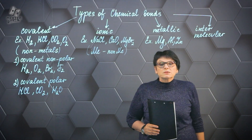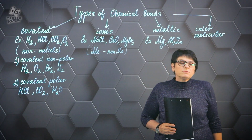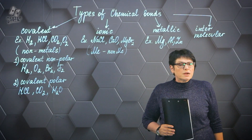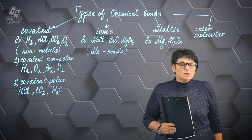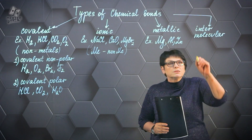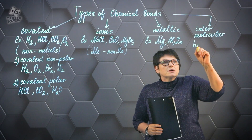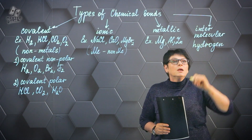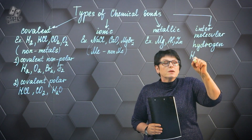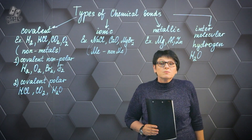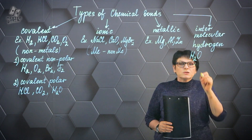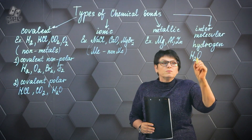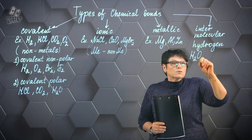And finally, intermolecular bonding, which is subdivided within itself — we will devote a specific lesson to this. The most well-known intermolecular bond is hydrogen bonding. Hydrogen bonding occurs between water molecules, for example. It's important not to be confused here: within the water molecule itself the bond is covalent polar, but between water molecules the bond is hydrogen bonding.